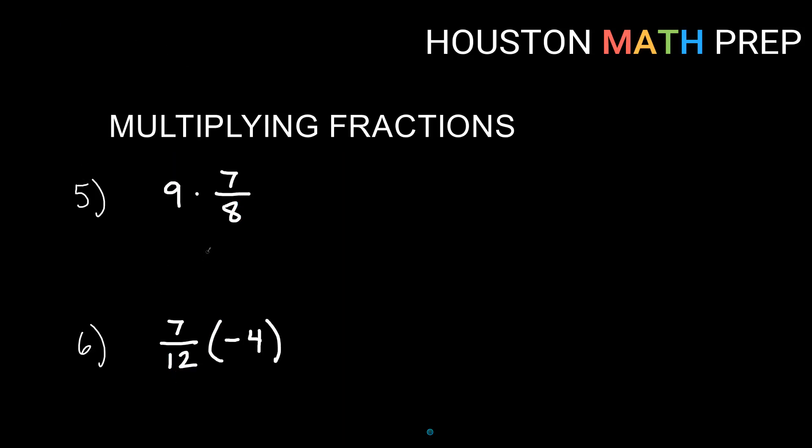So looking at number 5 here, I have 9 times 7 over 8. So these are not both fractions, but I can make 9 into a fraction, right? We know that any whole number we can write as that thing over 1. So we want to think of this as 9 over 1 times 7 over 8. So you can see that the 9 now, if we're going straight across, the 9 is really only going to multiply the 7, right? It's not the whole thing. 7 over 8 on top and bottom getting multiplied by 9. If we think of it 9 over 1, we have 9 times 7 is 63. And then 1 times 8 will give us 8.